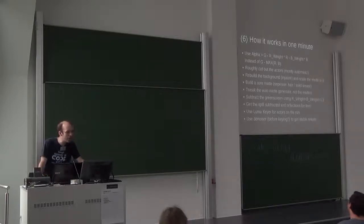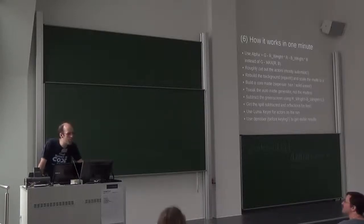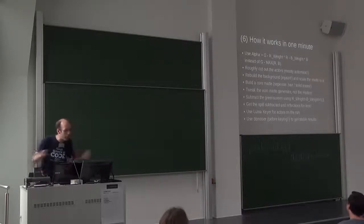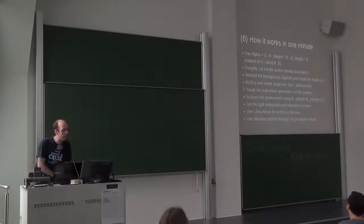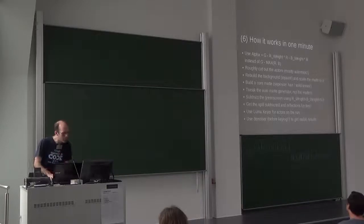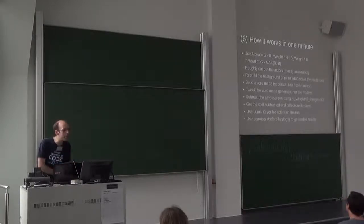In one minute, here's how it works. You may know how a difference keyer works — we used some average subtracting. We roughly cut out the actors, built the background using an inpainting node which is new to Blender, scaled the matte, built the core matte automatically, tweaked the automatic result, and so on. Very importantly, if you've got actors on the run, use a Luma Keyer, which also works in the process, and denoise the material or you'll get problems with the shadows.